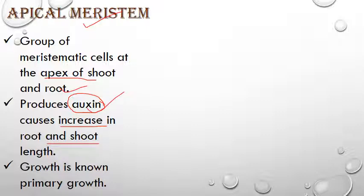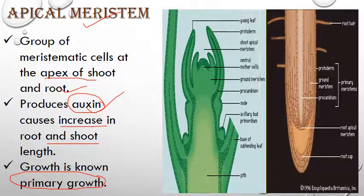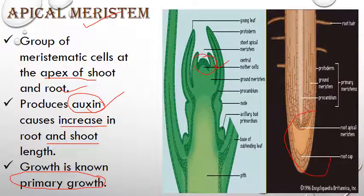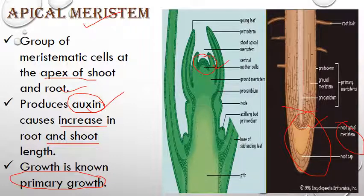The growth shown by apical meristem is commonly known as primary growth — that is, growth in length. This primary growth is initiated by the apical meristem. This picture shows root and shoot apical meristem: this region is the shoot apical meristem and this region is the root apical meristem. It helps in primary growth in roots and primary growth in shoot.